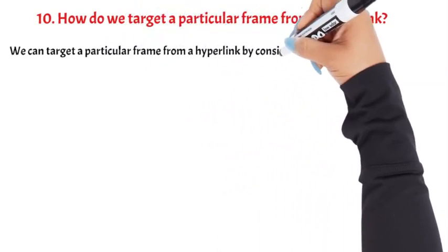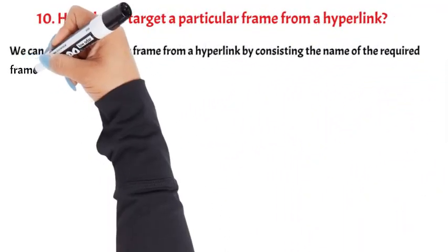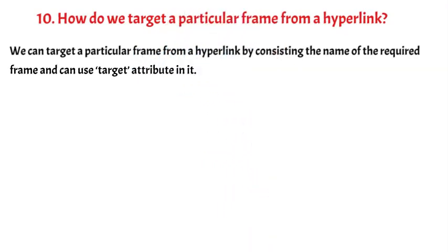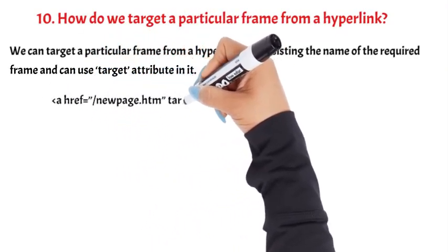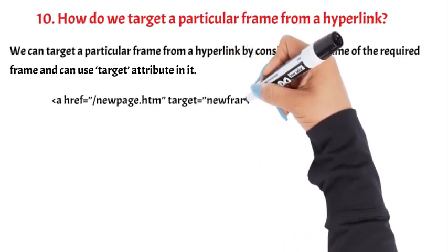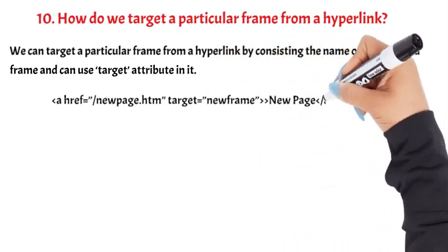How do we target a particular frame from a hyperlink? We can target a particular frame from a hyperlink by including the name of the required frame and using the target attribute: <a href="/new-page.htm" target="new-frame">new page</a>. Question 11.